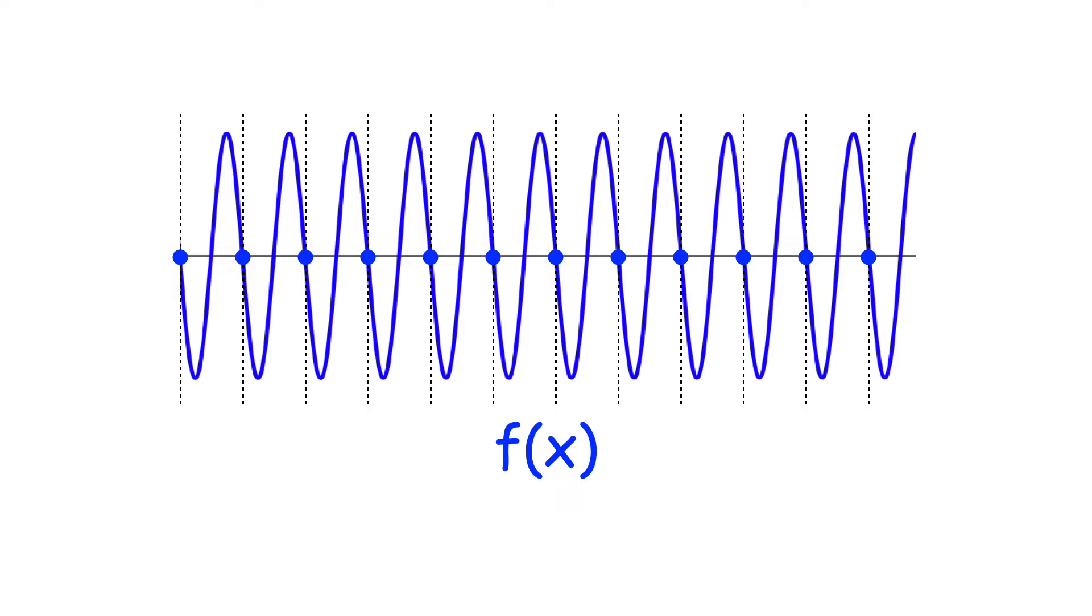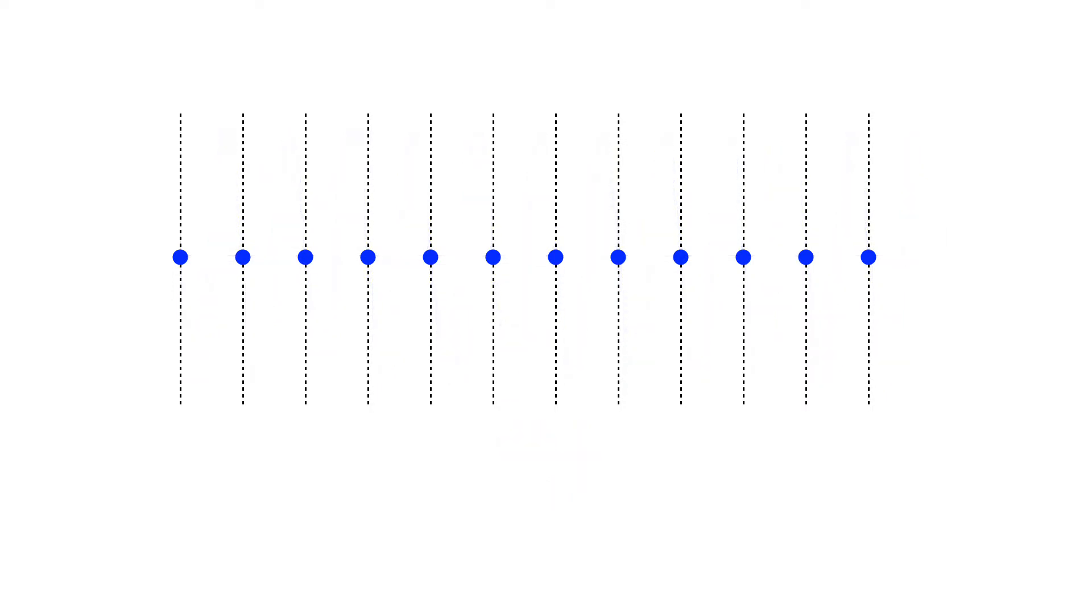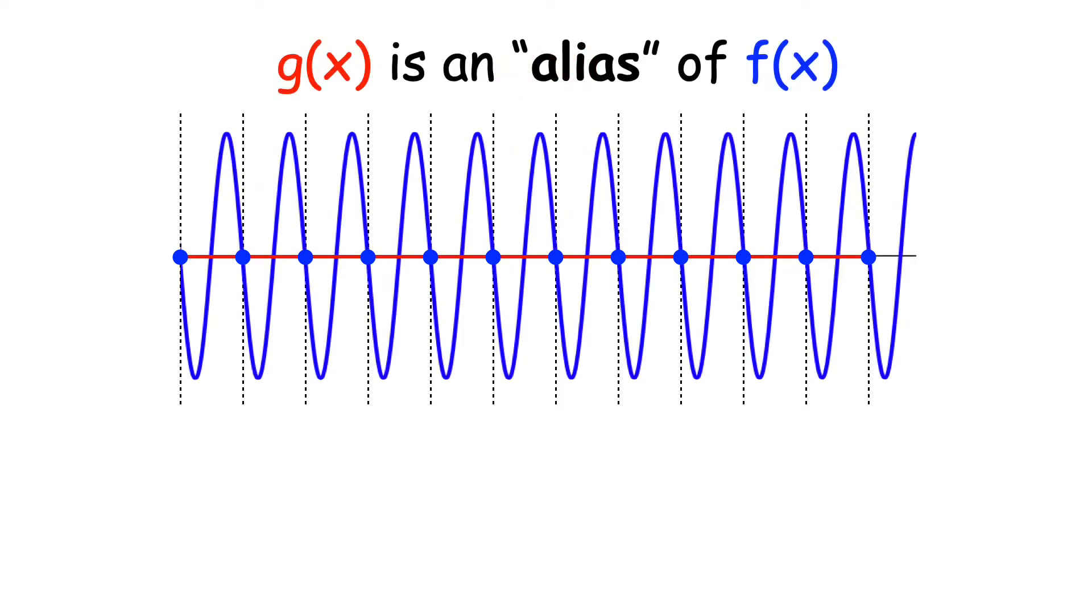Now suppose that all you knew about this function were these sample points, and you had to guess what the function was. You'd be pretty sure it's a line, right? Let's label our guess g of x and call it our reconstruction. When a reconstruction looks like a very different function, we call it an alias. g is like f's alter ego. But you're probably thinking, that's not fair. Steve chose the worst possible sampling points.